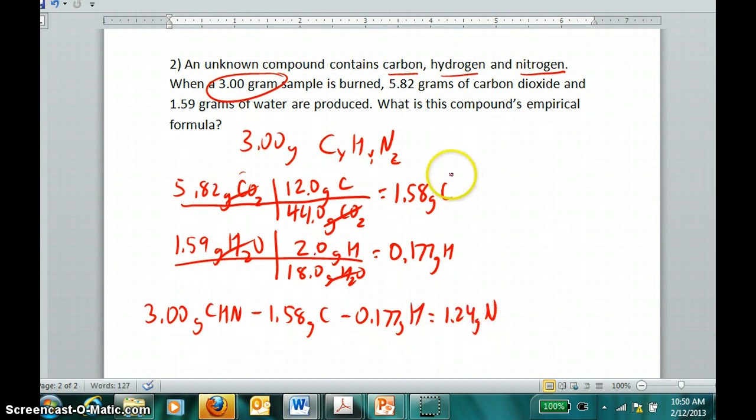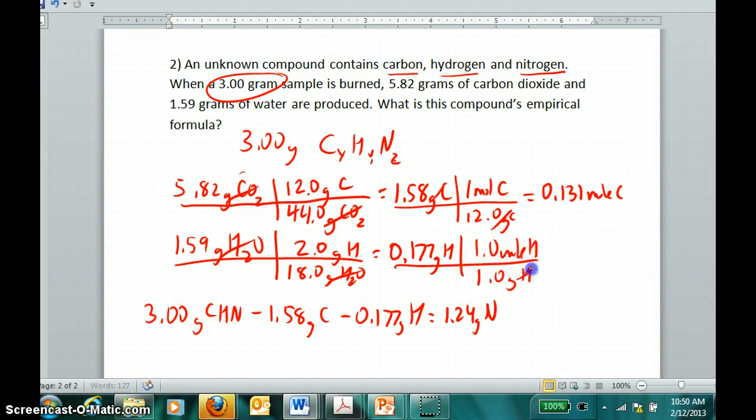Now that I have the masses of all three elements, masses don't help me - I need moles, actual numbers of atoms. One mole of carbon is equivalent to 12 grams of carbon, meaning my original sample contained 0.131 moles of carbon atoms. As one mole of hydrogen is equivalent to one gram of hydrogen, the original sample also contained 0.177 moles of hydrogen atoms. Lastly, because a mole of nitrogen is equivalent to 14 grams of nitrogen, we know that there were 0.088 moles of nitrogen atoms.